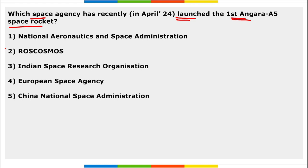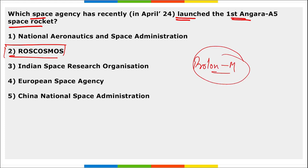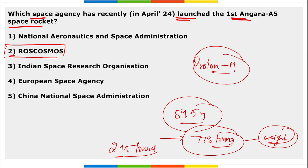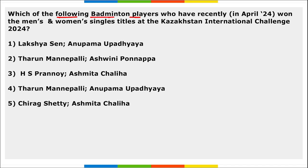Next: which space agency recently launched the first Angara-A5 space rocket? It was launched by Russia's space agency Roscosmos, launched from Russia itself. This will replace the Proton-M as Russia's heavy lift rocket. The Angara-A5 is a 54.5-meter, three-stage heavy lift rocket weighing 773 tons, with a capacity to carry up to 24.5 tons of payload.